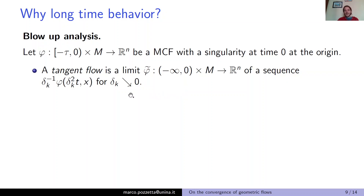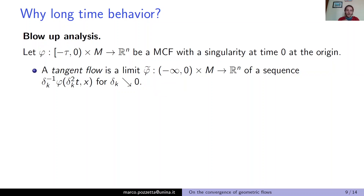We have a sequence of numbers δ_k going to zero, and we take the space-time dilation of the mean curvature flow with factor 1/δ_k. Since δ_k → 0, we are doing a dilation — a blow-up — around the origin. When we pass to the limit, the resulting φ̃ is a good description of the concentration happening at the origin: it is called a tangent flow. A first problem is that the limit φ̃ depends in general on the sequence δ_k chosen. The spontaneous question is: are tangent flows unique? Is it true they do not depend on the choice of the infinitesimal sequence δ_k? Uniqueness of tangent flows would mean we have a good description of what happens at the singularity, independent of the rescaling chosen.